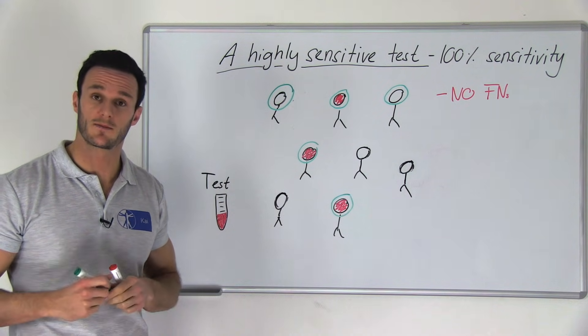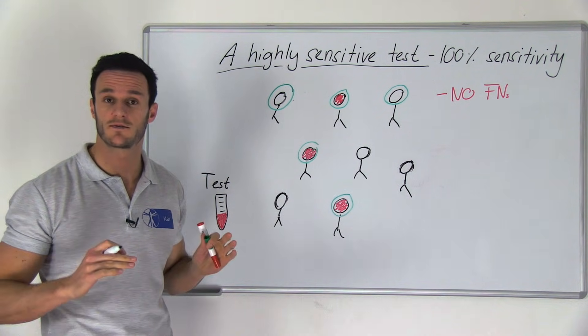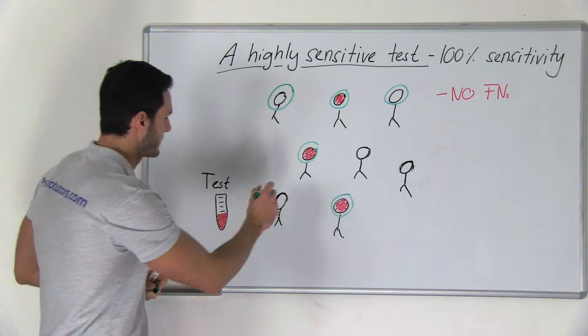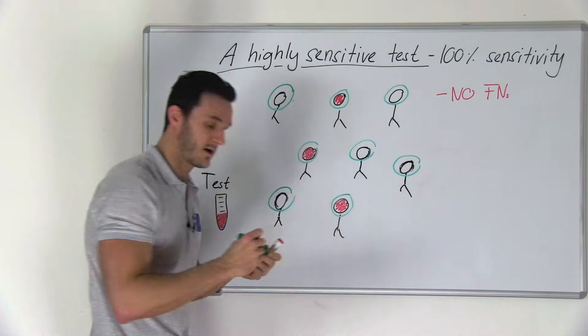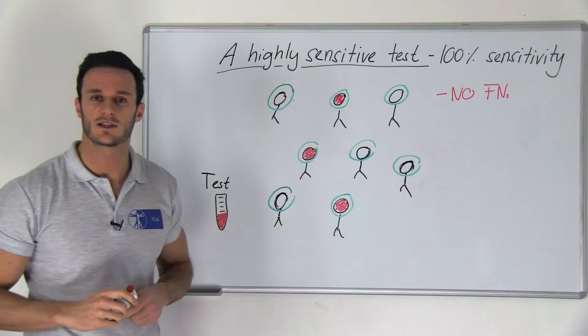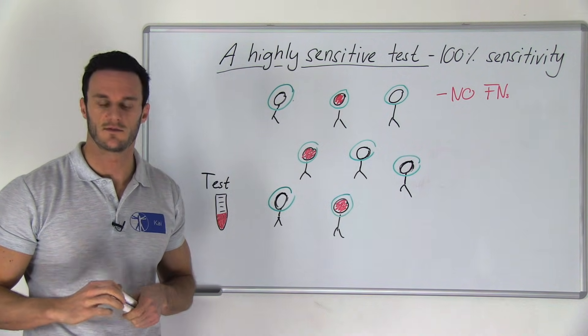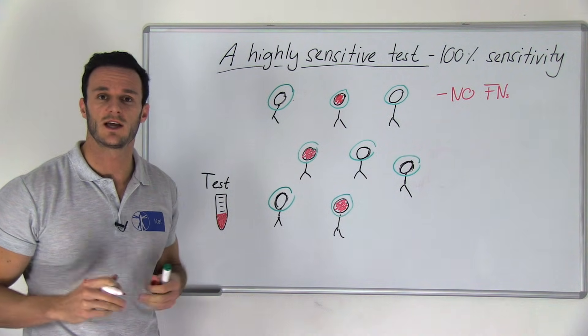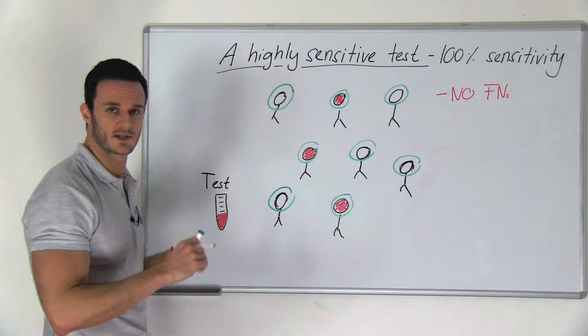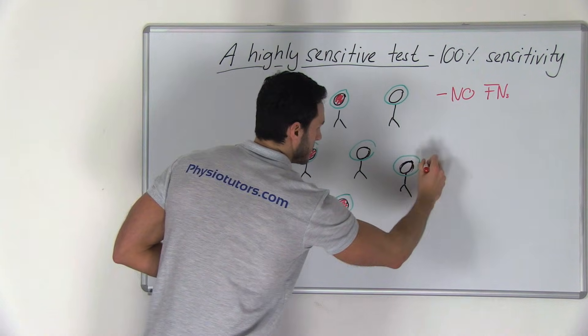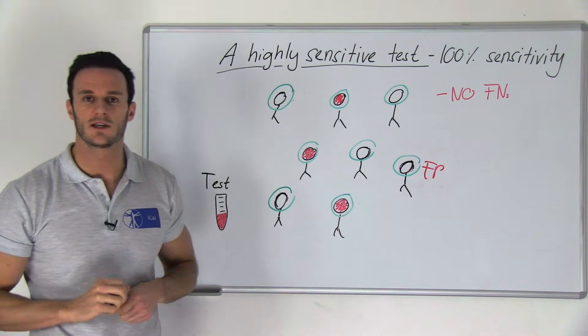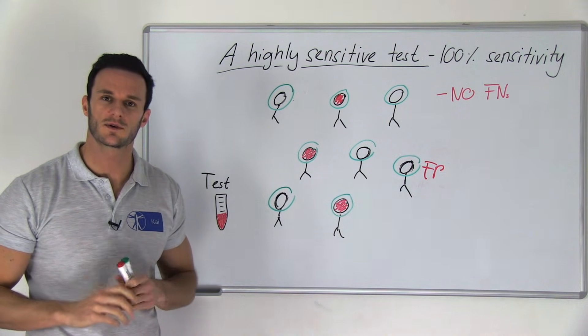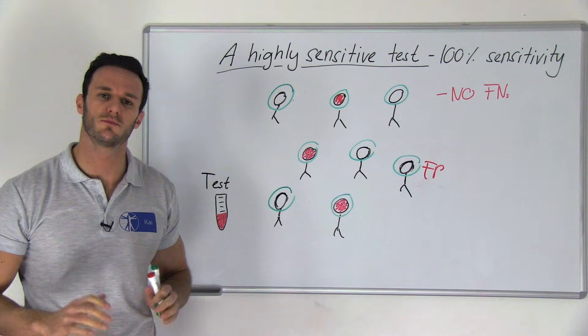If we modify our example a bit and we now say that for example everyone has a positive test outcome, we still have a test that is 100% sensitive. The problem now is that a lot of them are falsely diagnosed positive, and therefore our test accuracy will suffer. For this reason we need a test that is more specific.